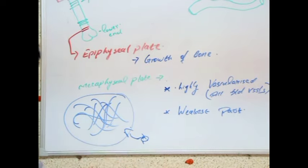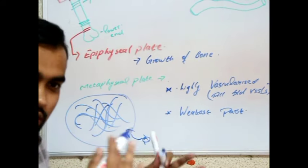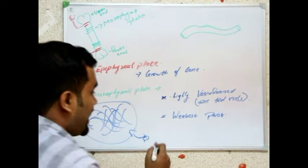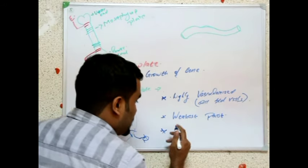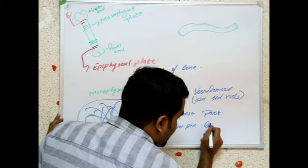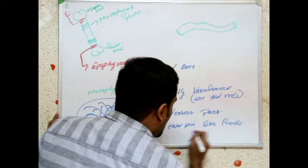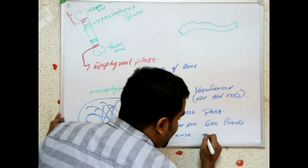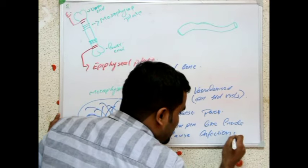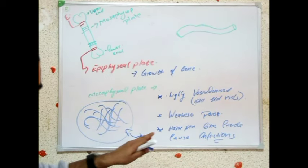So imagine if bacteria infect this structure of the bone — the bacteria can easily hide here because this structure is already hairpin-like. It can spread the infection very easily, making it very hard to diagnose since it is inside. This hairpin-like structure inside causes infections. This can be a clinical question.